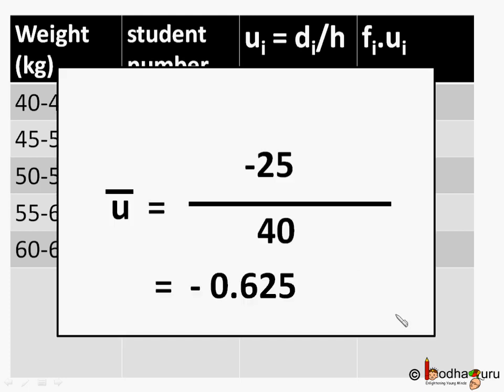To find u bar, we divide it by sum of frequencies that is 40 here. So minus 25 by 40 which will be equal to minus 5 by 8 which is minus 0.625.